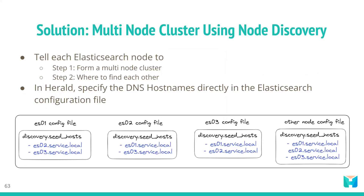To have multiple nodes of Elasticsearch work together, we need to configure them to form a single cluster. First, we have to tell the nodes that they need to form a multi-node cluster, and second, we have to tell them where to find each other. Since we are using AWS Cloud Map for service discovery, in the configuration file for each node we can specify the DNS host names of other nodes. For example, in the configuration file for es01 — Elasticsearch node number one — we list the DNS host names of node two and three.